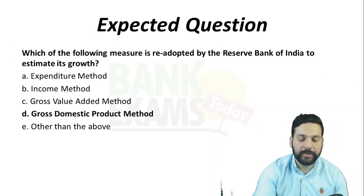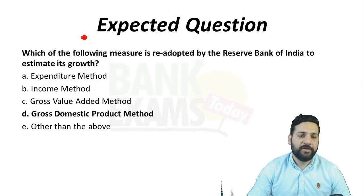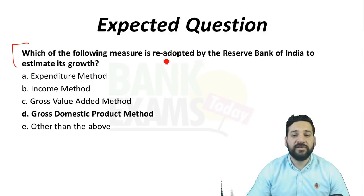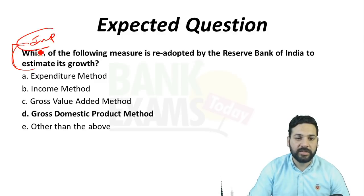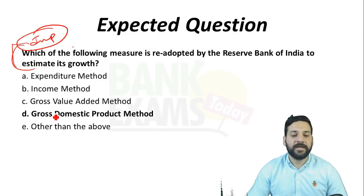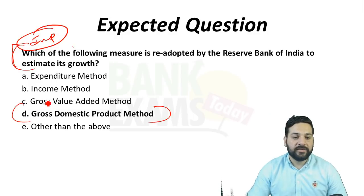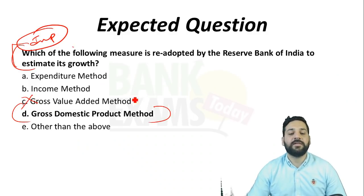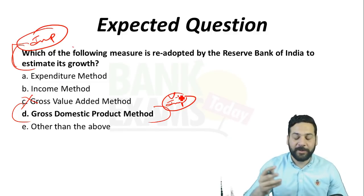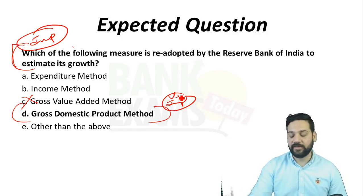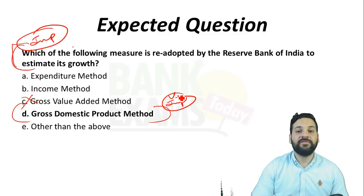Expected exam question: Which of the following measure has been readopted by the Reserve Bank of India to estimate its growth? The answer is the Gross Domestic Product method — it is not the Gross Value Added method. This is a very important question, and that is why this short bite-size lecture was done.